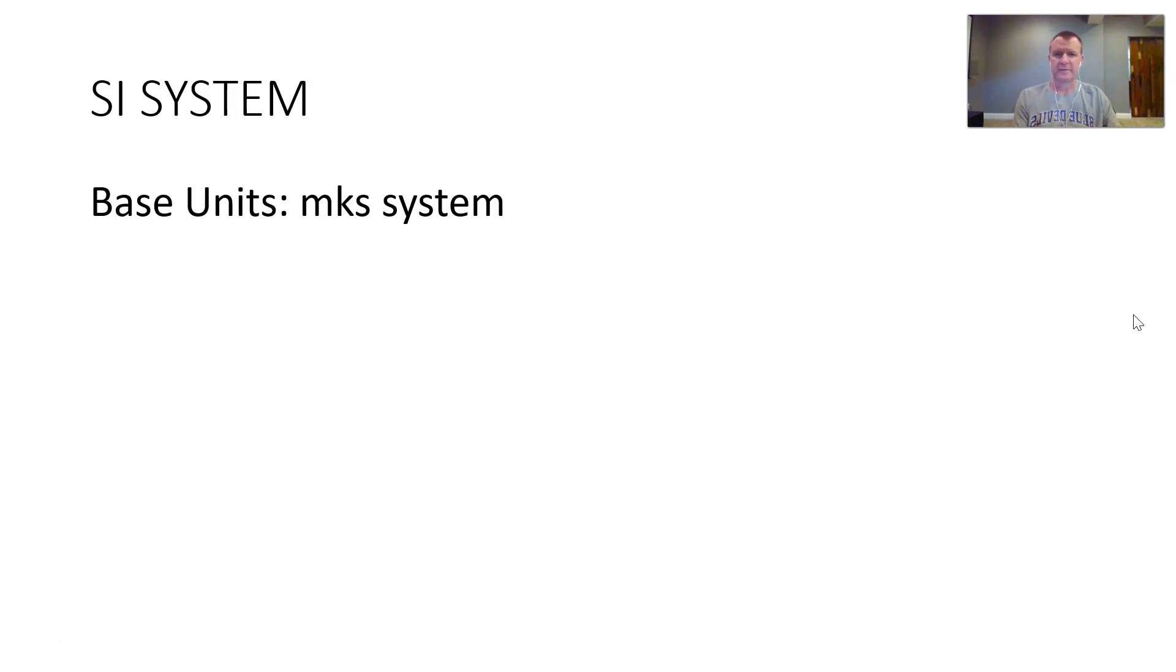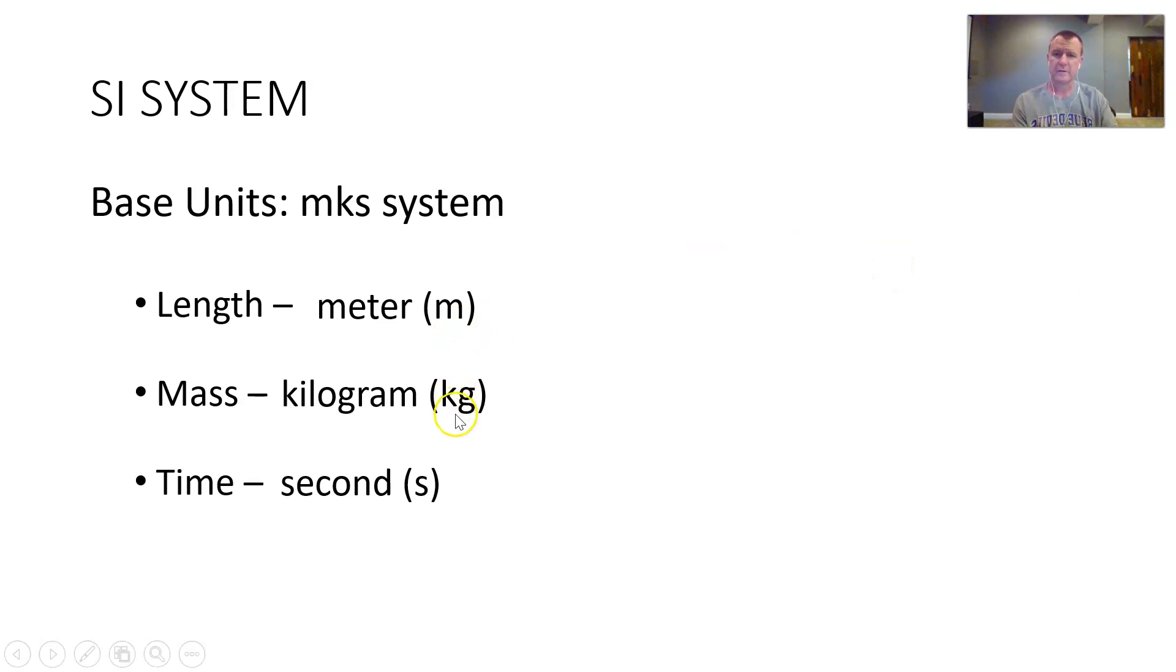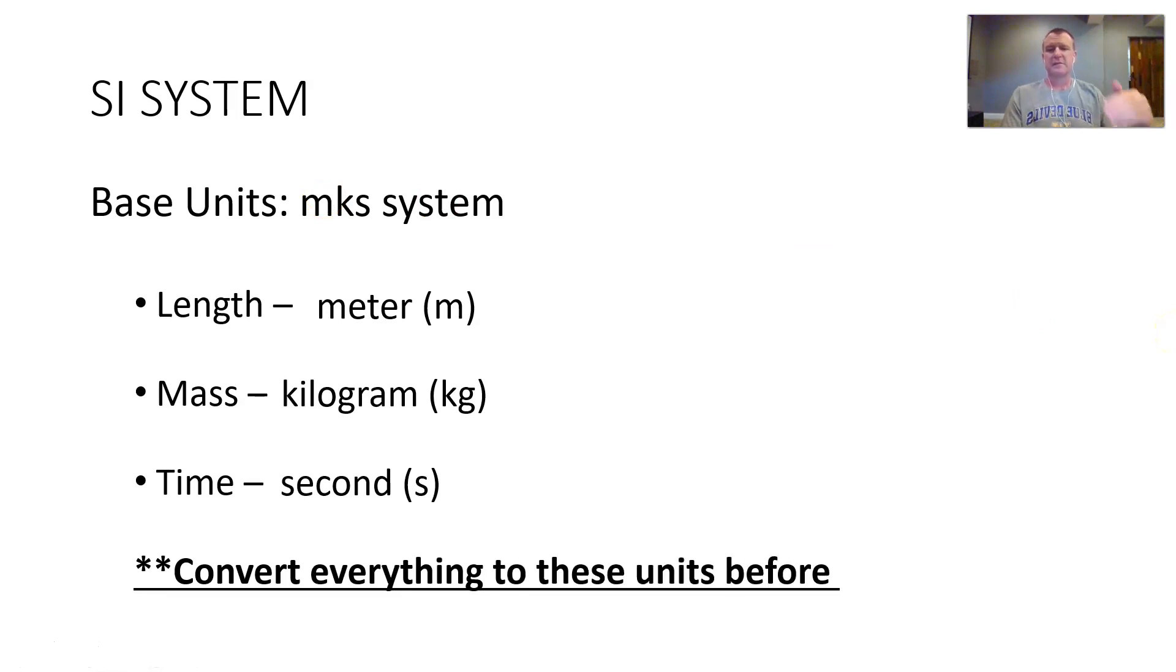For this class, we're going to use the MKS system in the SI system. The base units will be for length, we have a meter. For mass, we've got kilograms. So be careful with this one, because a lot of people want to just use grams, but we need it in a kilogram. That's how all the other units are going to be based off of. So make sure you've got things in kilograms there. And then for time, it is seconds. Meters, kilograms, seconds, MKS.